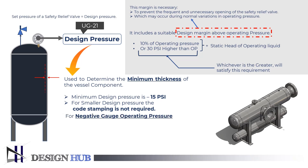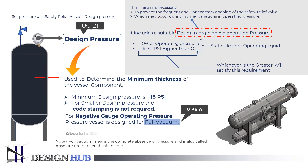For negative gauge operating pressure, a pressure vessel is designed for full vacuum. Full vacuum is the state in which the internal pressure of the vessel is a vacuum: absolute pressure equals 0 kilopascals, and external pressure is equal to 100 kilopascals, which is approximately the atmospheric pressure.